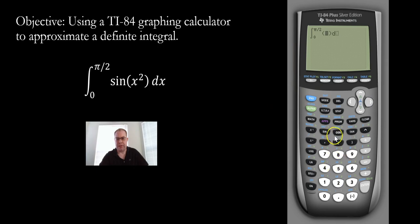And then we have the function sine of x squared. And then put in the variable here. It's going to be x. And then just click on enter. And there's the approximation.